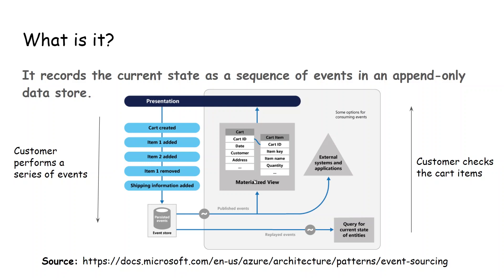Here we have a customer performing a series of actions: the customer added shipping information, removed item 1, added item 2, added item 1, and created the cart. These series of events will be added to the event store. Then, if a user wants to check the cart items,